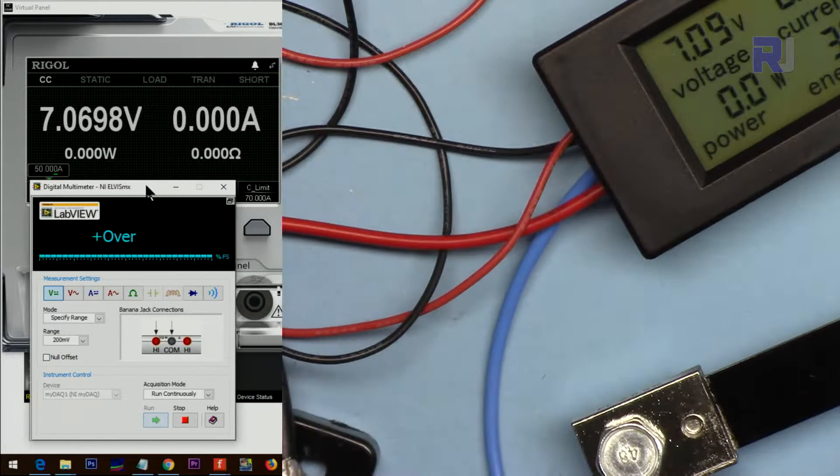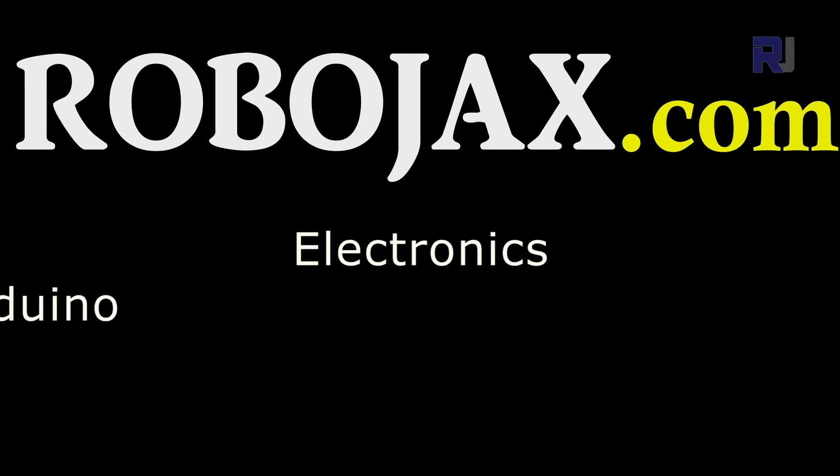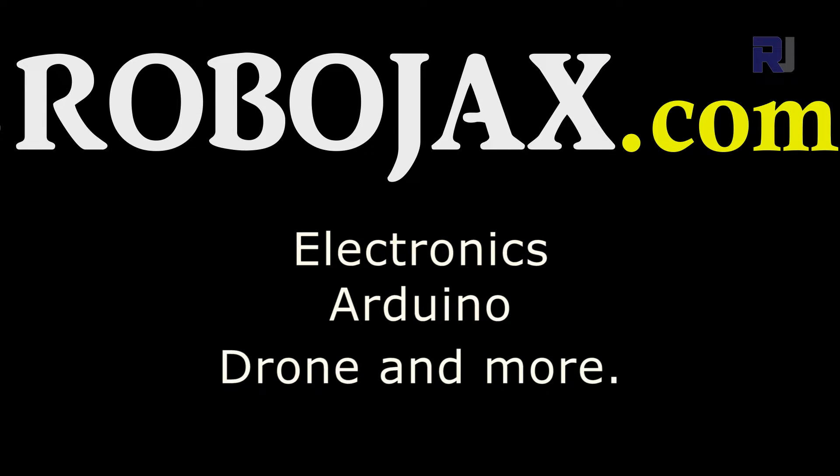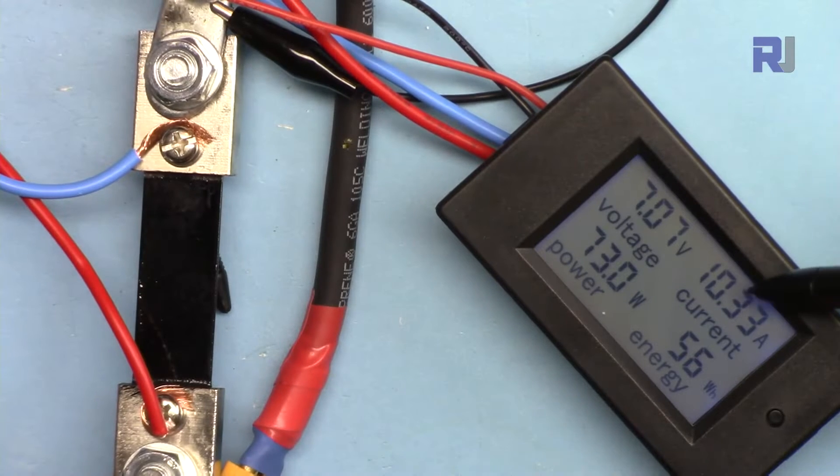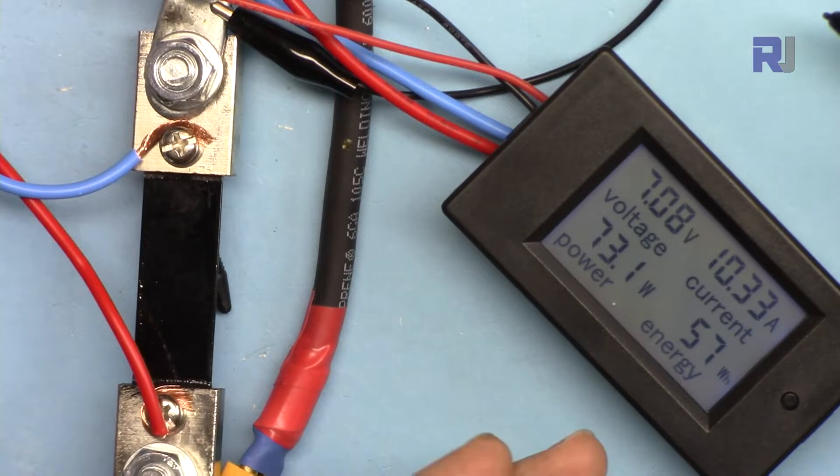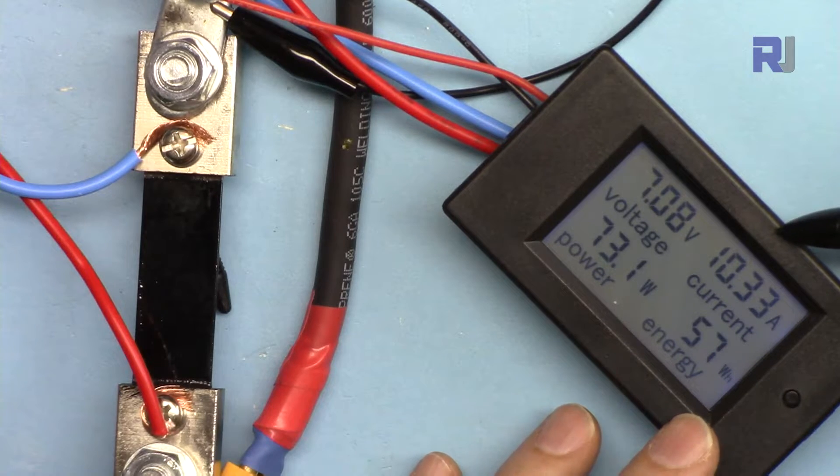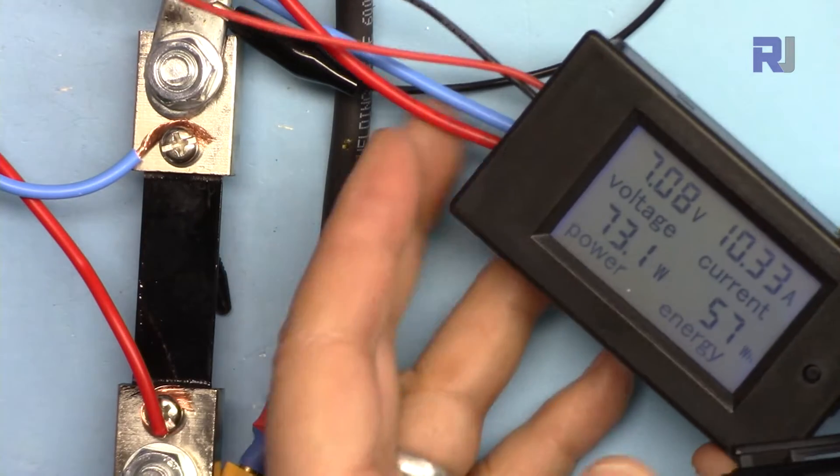To measure DC current, let's get started with this. In many applications you need to measure above 10 ampere current which most multimeters can't handle, for example in battery charging, solar applications, and power electronics.